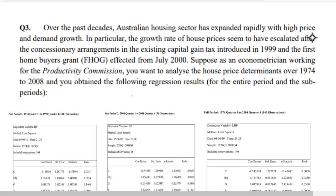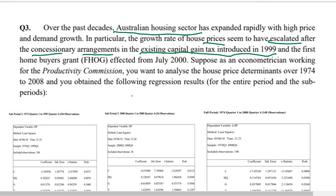This question is about the Australian housing sector, which has expanded rapidly with high price and demand growth. The growth rate of house prices seems to have escalated after the concessionary arrangements in the existing capital gains tax in 1999, and the first home buyers grant effected from July 2000.